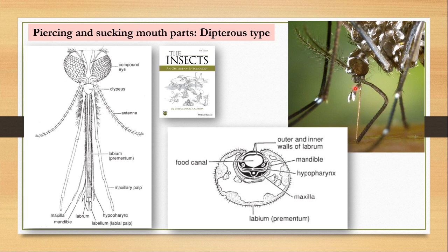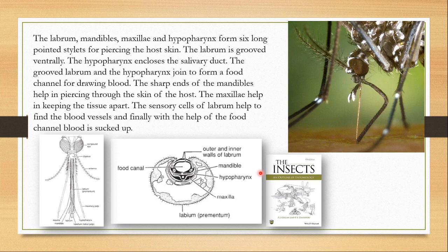The stylets are formed by the labrum, the two mandibles, and the two maxillae and hypopharynx — six long pointed stylets for piercing the host skin. The labrum is grooved ventrally and encloses all six stylets. When these stylets are inserted into the animal tissue, the labrum gets bent and is left behind, as it is too thick to insert inside.